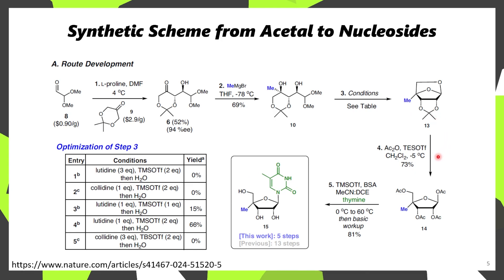Then, using acetic anhydride in the presence of triethylsilyl triflate in dichloromethane, they're afforded with this peracetylated product 14. This product 14 can then be treated with TMS triflate, yet again, in the presence of a nucleobase such as thiamine, which then affords them with the nucleoside 15.